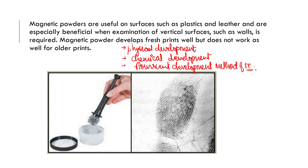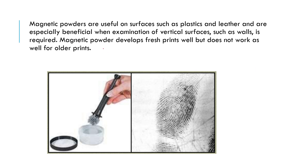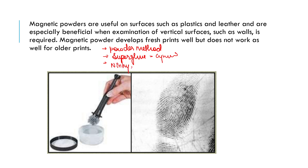We started with the physical method of development. The most common method is the powder method, followed by the superglue fuming method, the ninhydrin method, and cyanoacrylate fuming. Superglue is equal to cyanoacrylate. These are the most common and popular physical methods which we have covered.